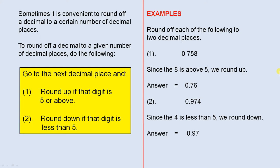Sometimes it is convenient to round off a decimal to a certain number of decimal places. To round off a decimal to a given number of decimal places, do the following.